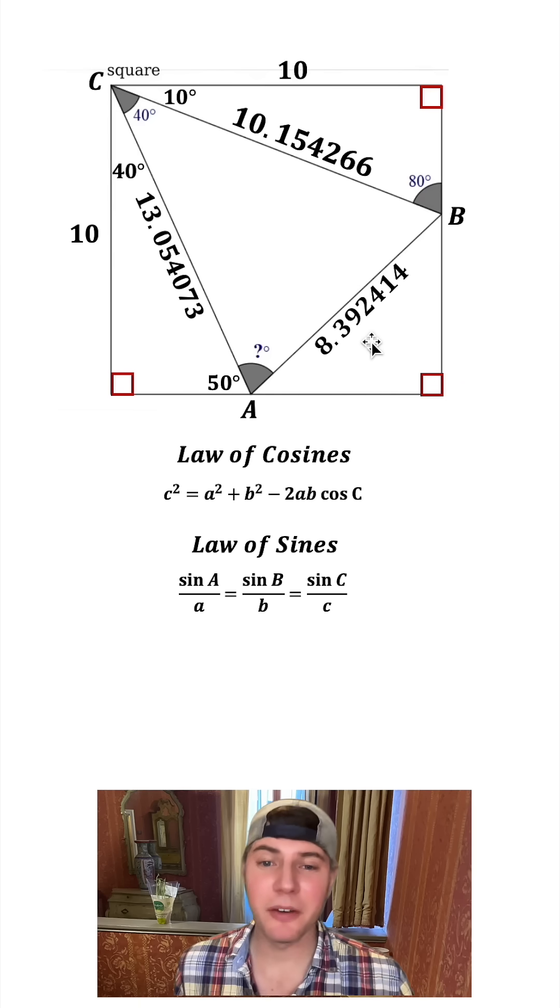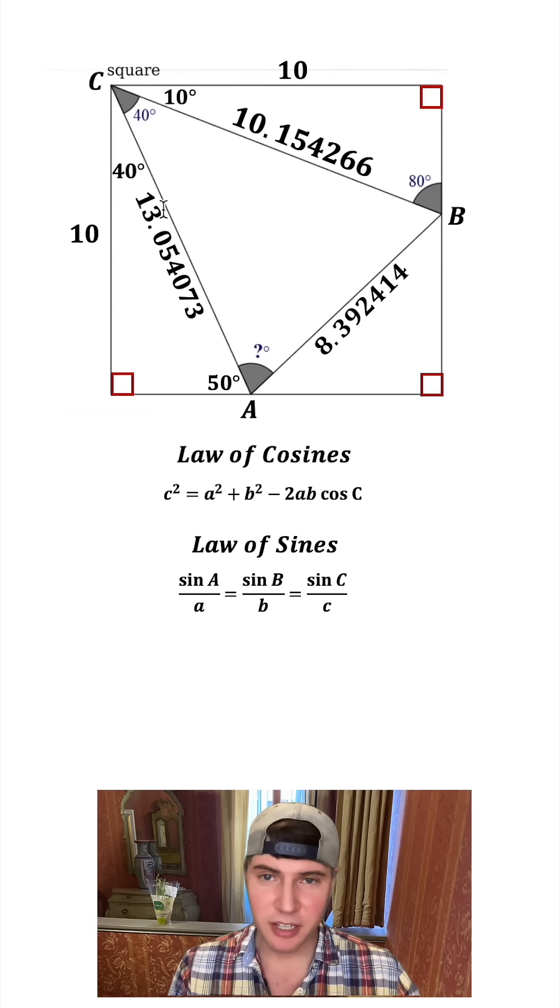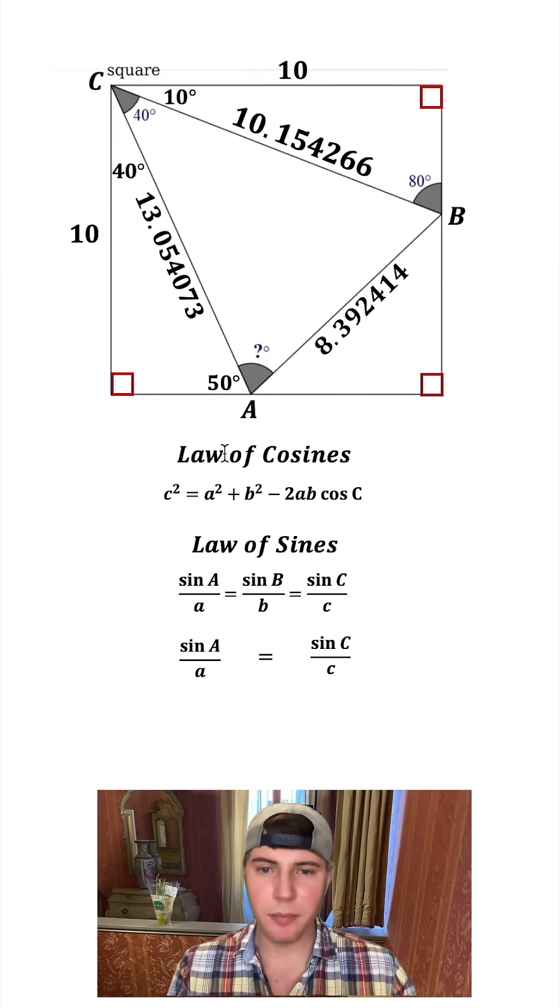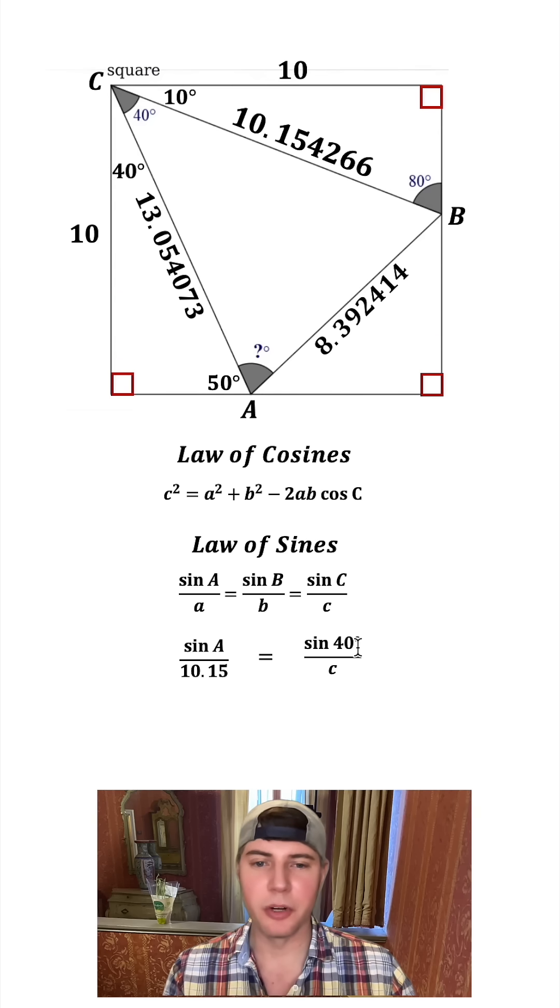So we're still not done yet. Now we have to use law of sines. We're only interested in the A's and the C's, so we're just going to bring those two down. Capital A is what we don't know, so I'm going to leave that alone. Lowercase a is the 10.15. The angle C is 40 degrees, and then the side length C is this 8.39.